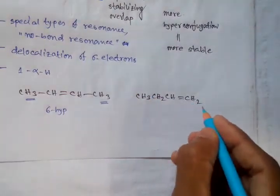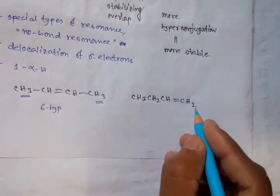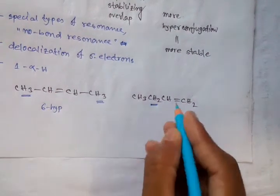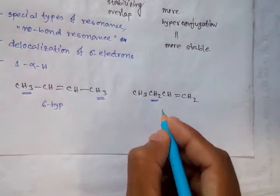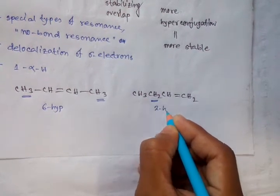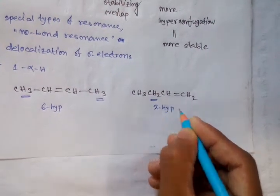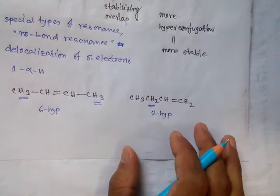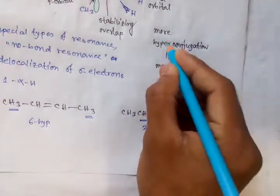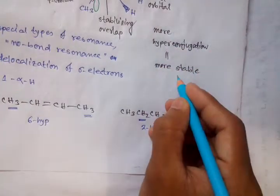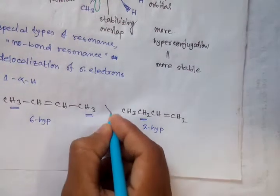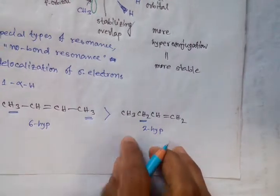But in the second case, only these 2 hydrogens are responsible for hyperconjugation, so only 2 hyperconjugations are possible. We know that more number of hyperconjugations means more stable, so the first structure is more stable than the second one.